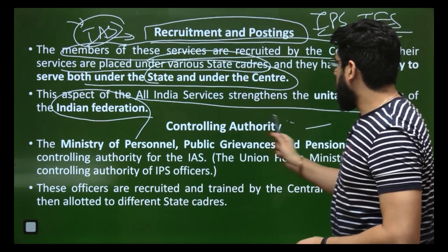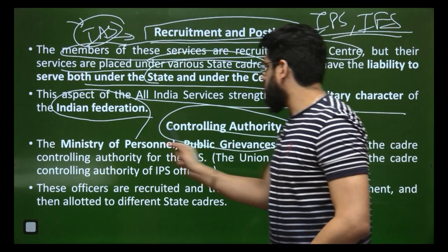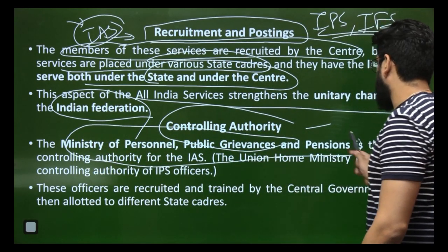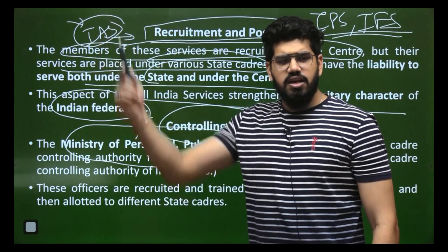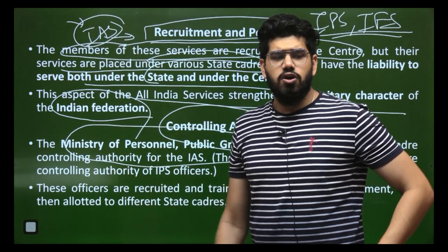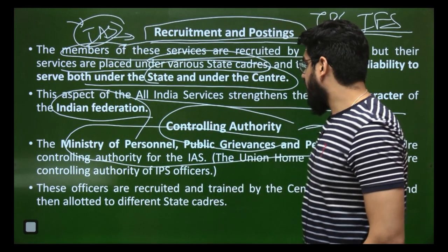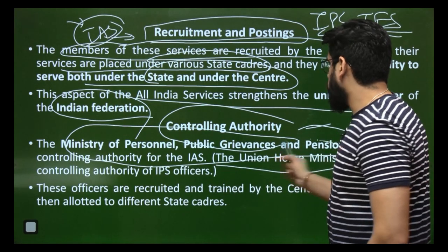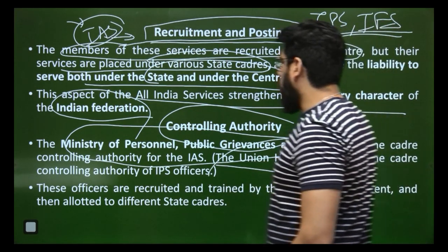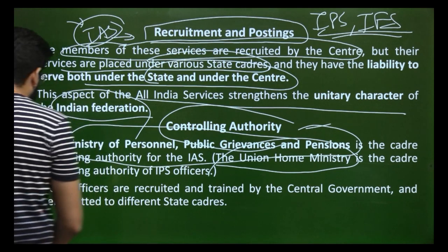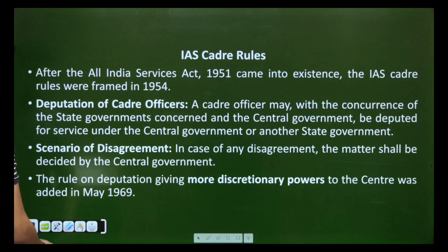The controlling authority of IAS officers is the Ministry of Personnel, Grievances and Pensions, which oversees these officers throughout the country. For IPS officers, the controlling authority is the Union Home Ministry. All these officers are trained by the central government and then sent to different cadres.